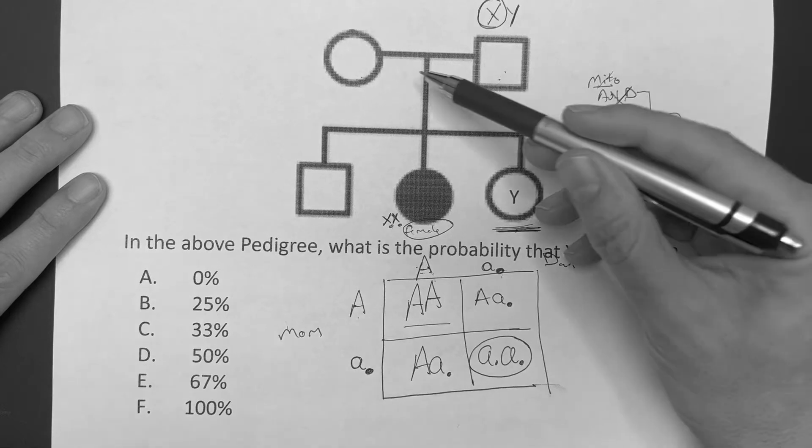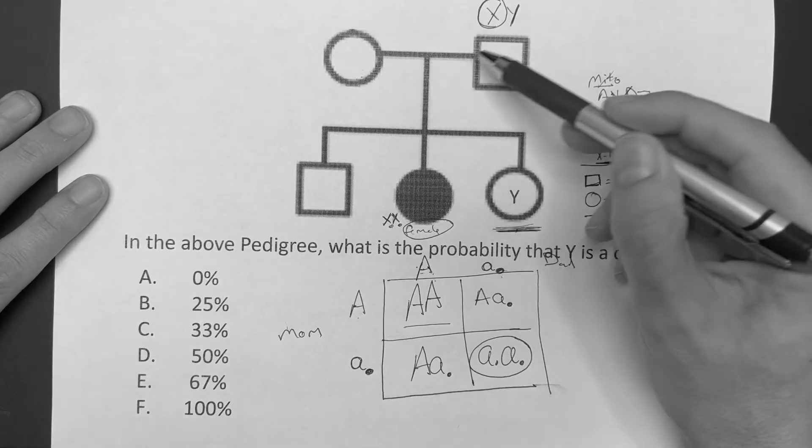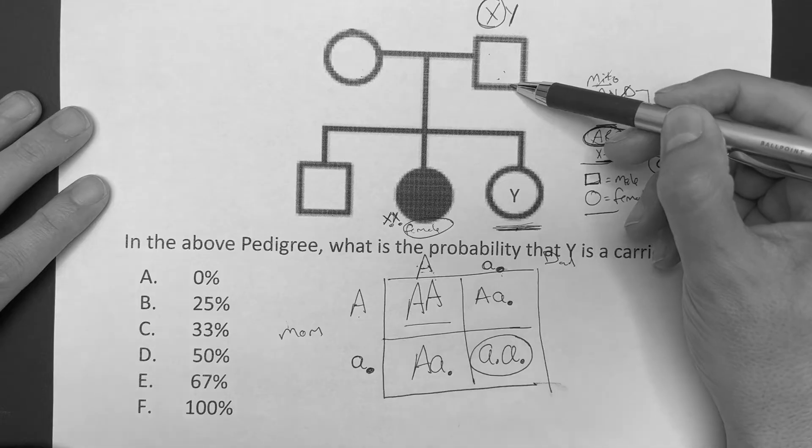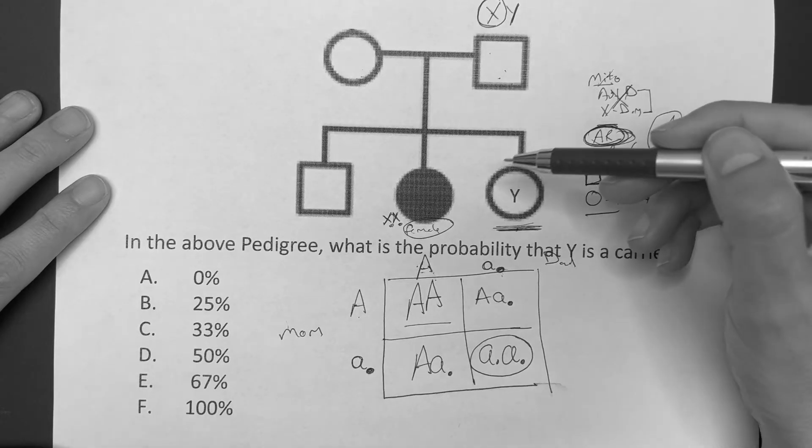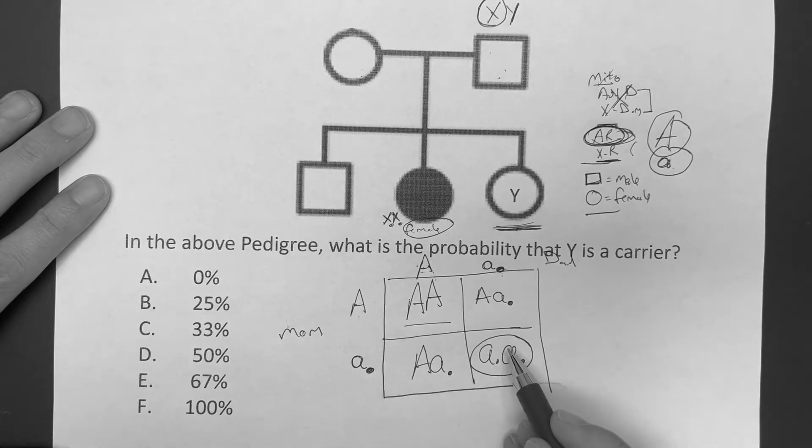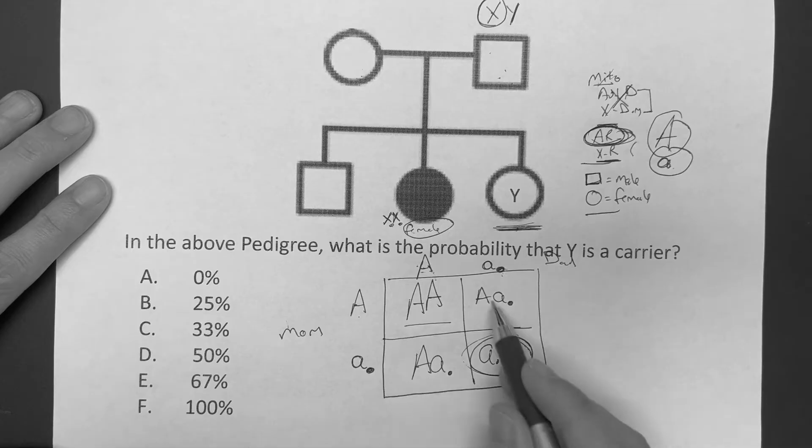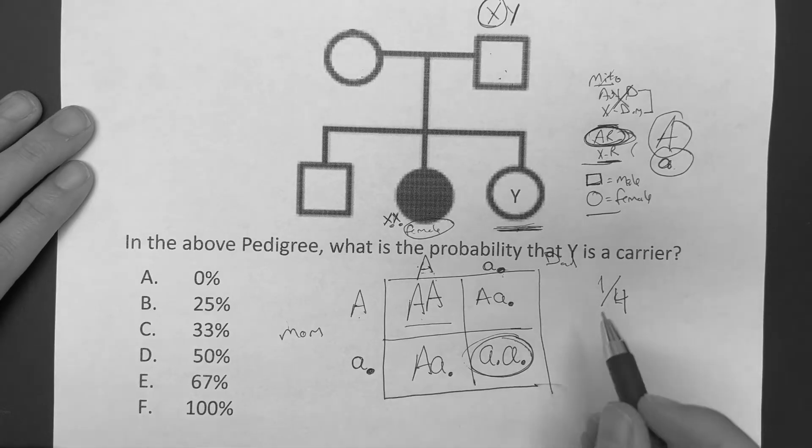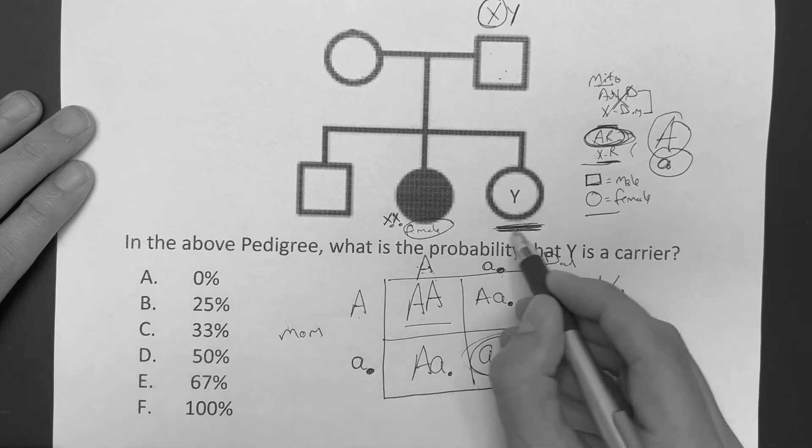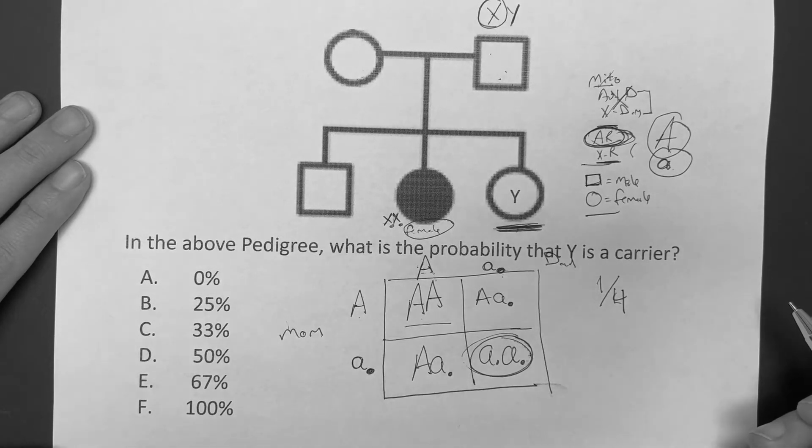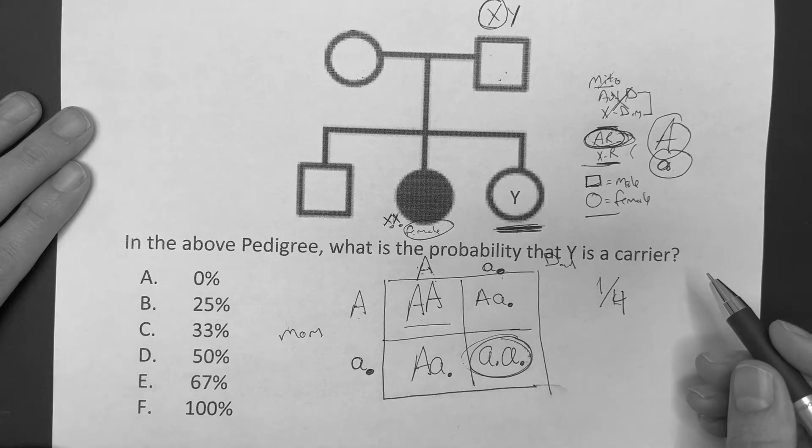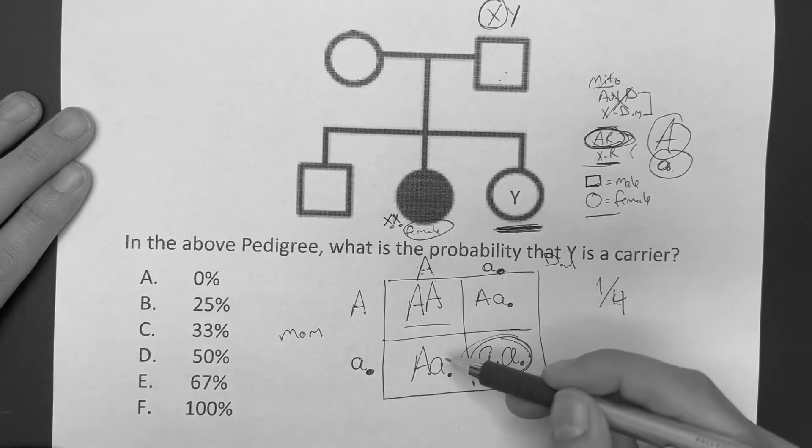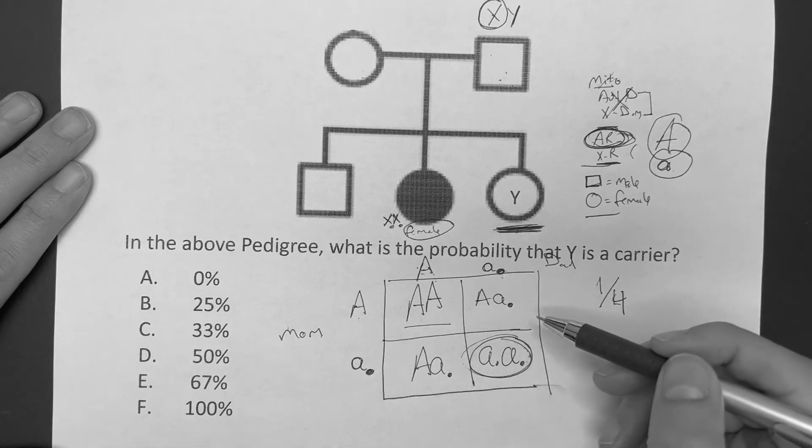So the chances, if they knew ahead of time that they were carriers due to genetic testing or whatever, and the question said what is the probability that one of their children would actually express this condition, then you would say what? You would say one out of how many possibilities? One out of four. Make sure you have your answer choice for this. What is the probability that Y is a carrier? I think most people get tripped up. They might say, the probability that Y is a carrier, oh, that means they're right here or here, must be 50%, two boxes out of four.